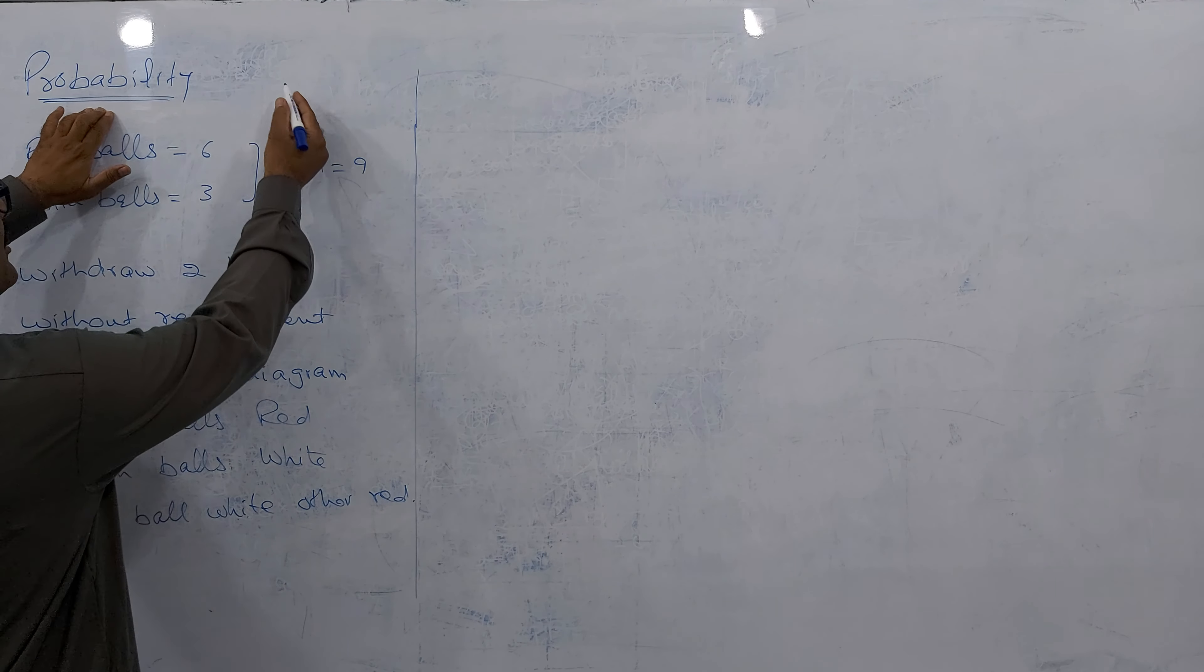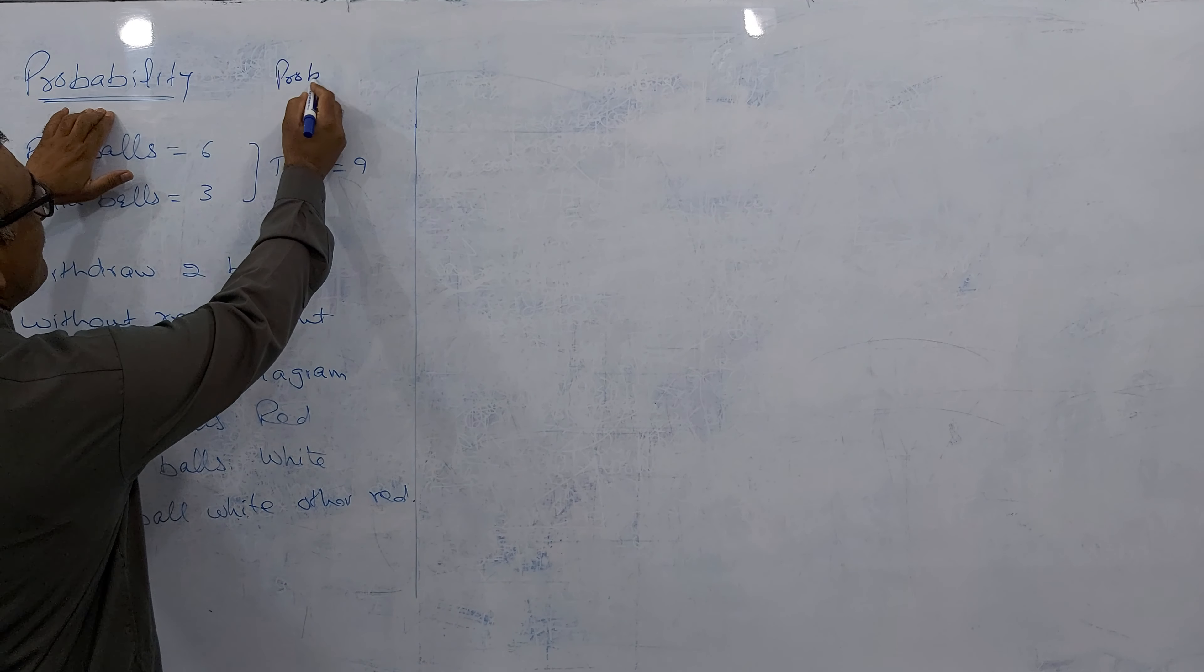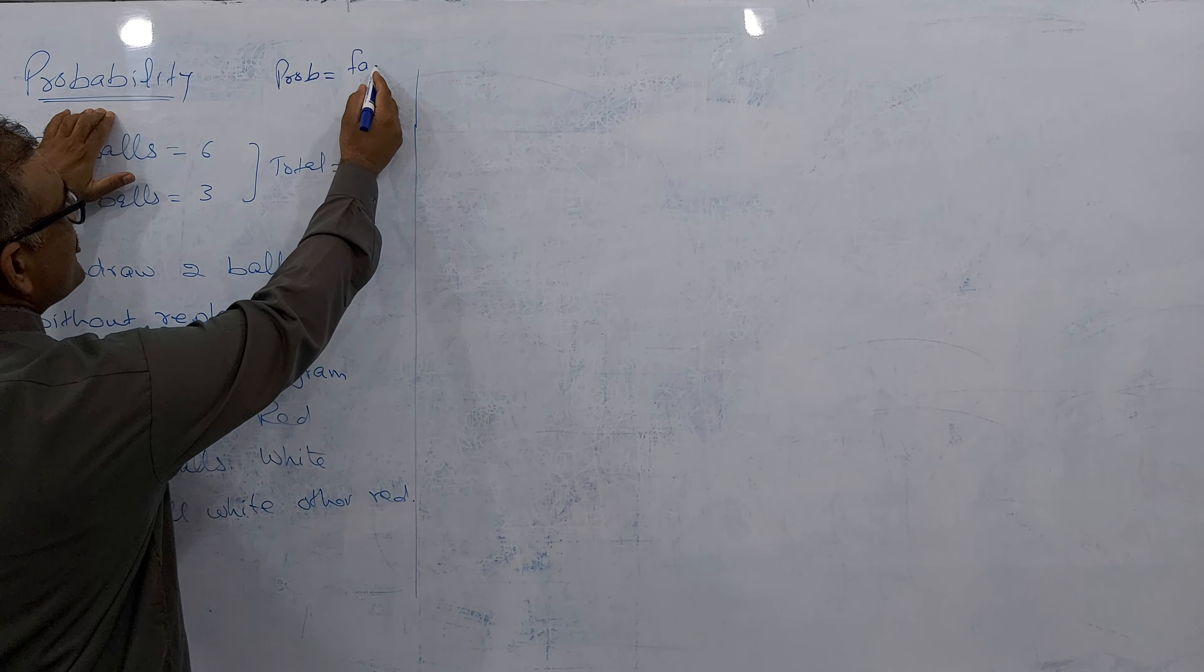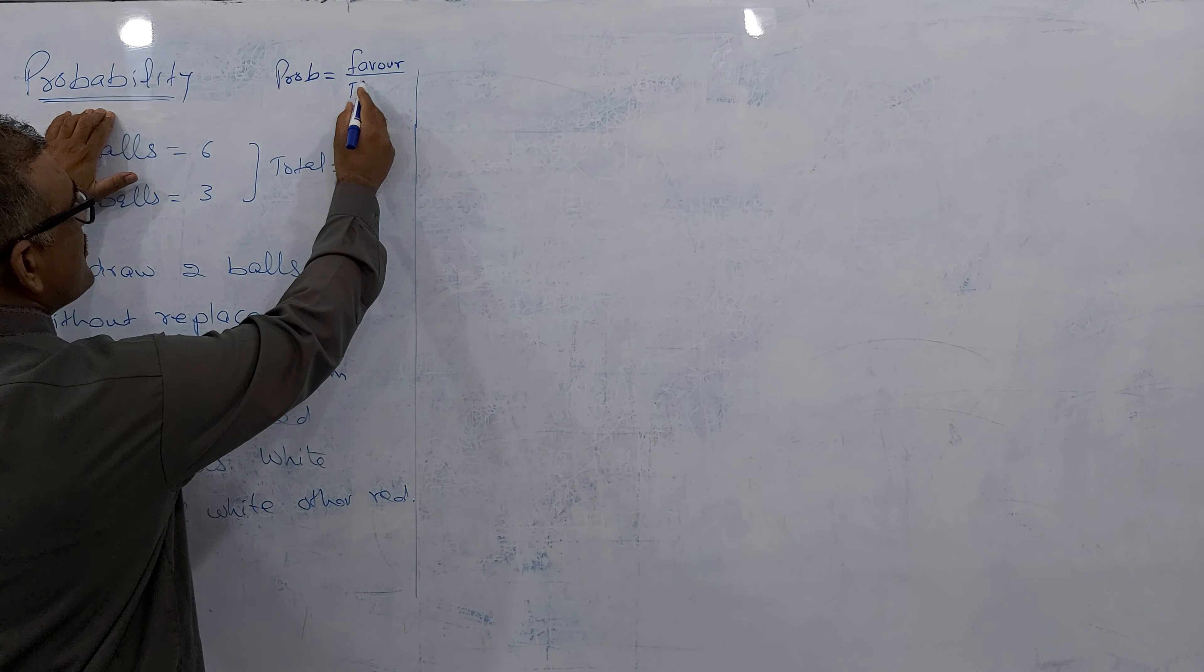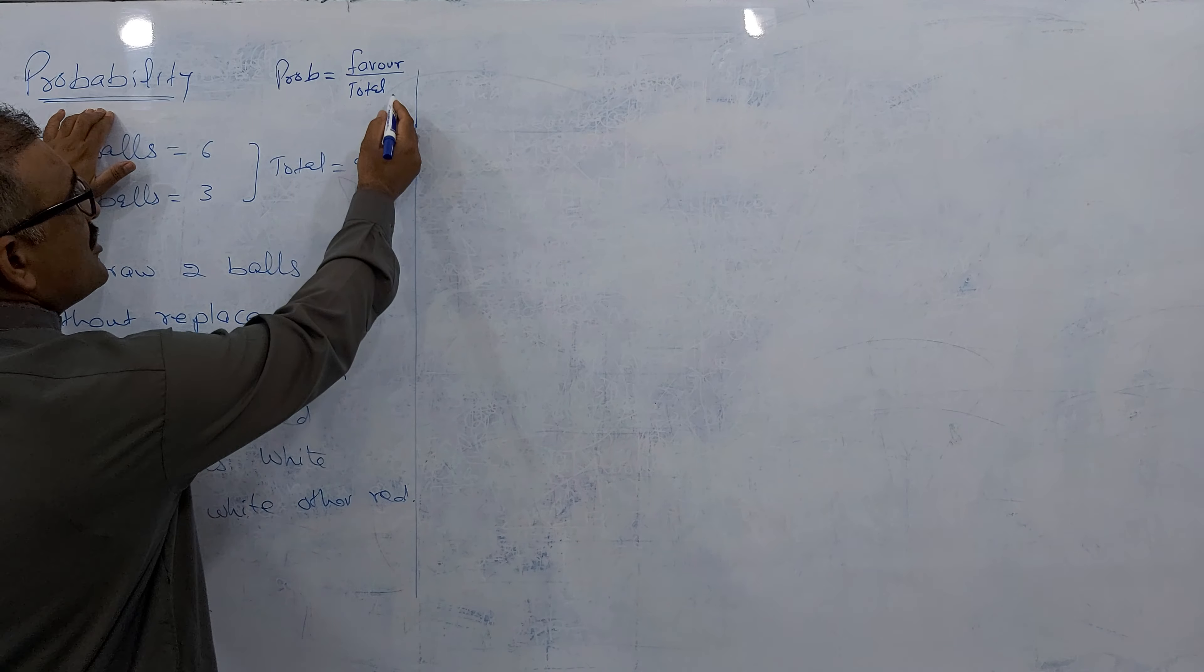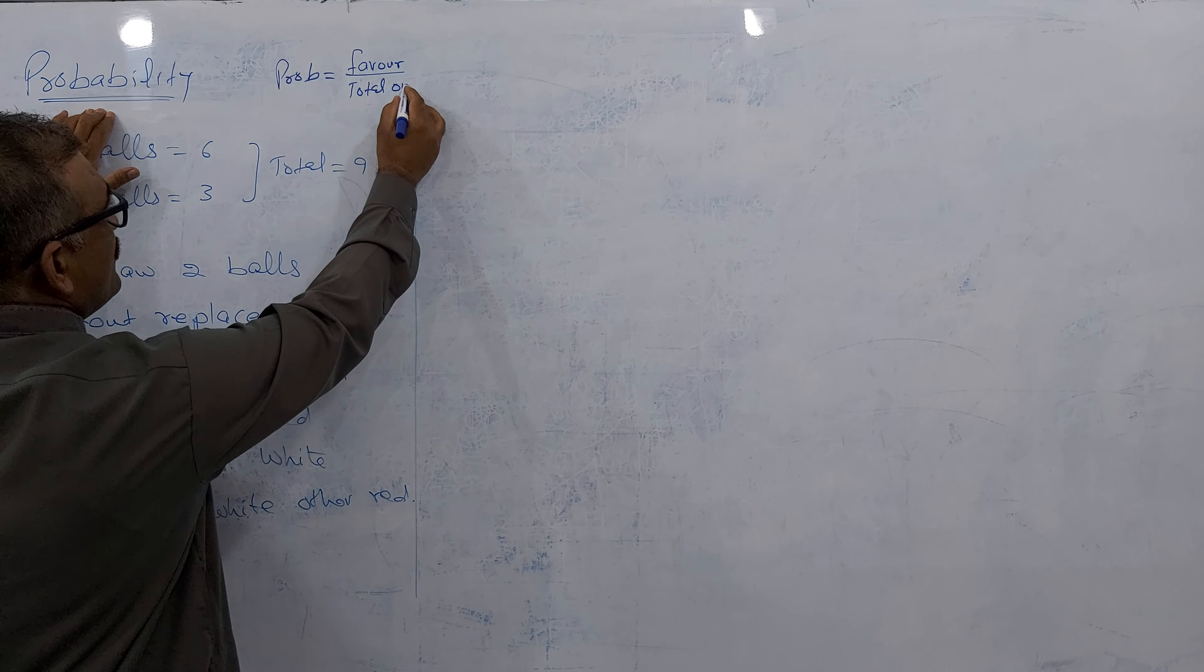What's the probability formula? We have normally favorable outcomes, what you're favoring, divided by total outcomes. Outcome stands for result.